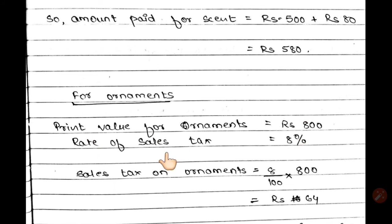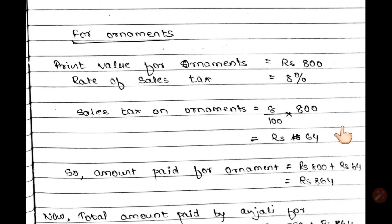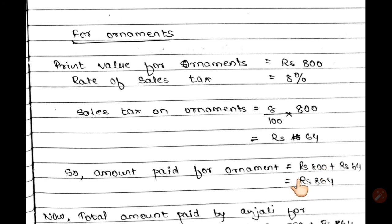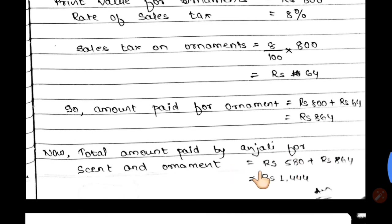The print value of ornaments is Rs.800 and the sales tax is 8%. So 8/100 × 800 = Rs.64 tax. Adding the print value and tax for ornaments gives the selling price. The total amount Anjali pays to the shopkeeper is Rs.1444.